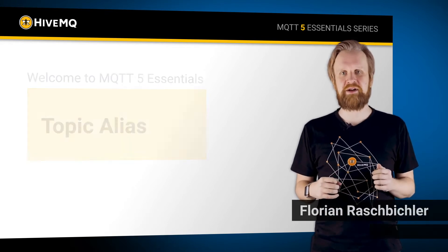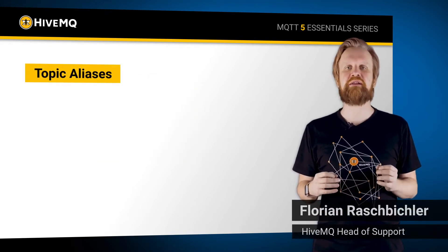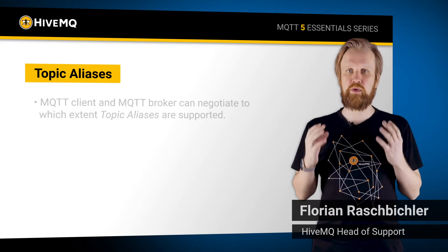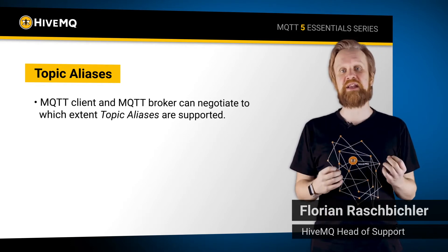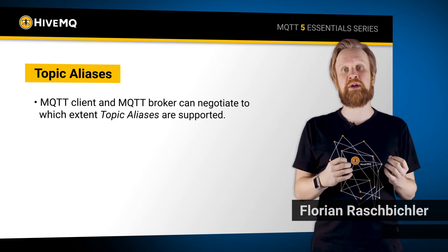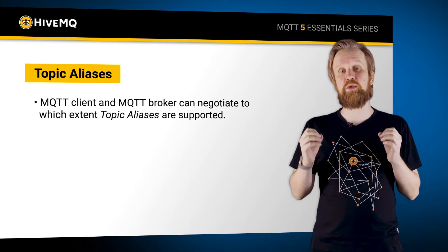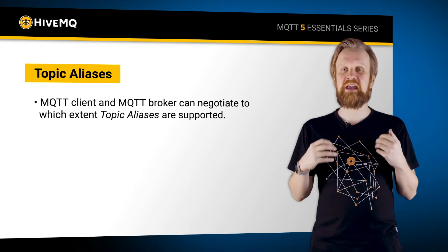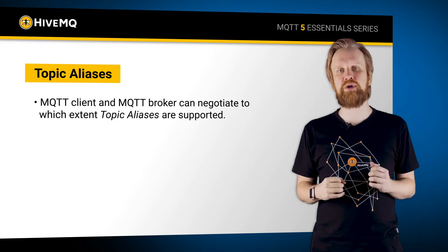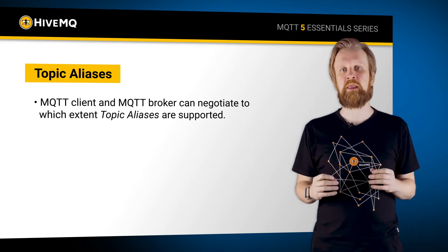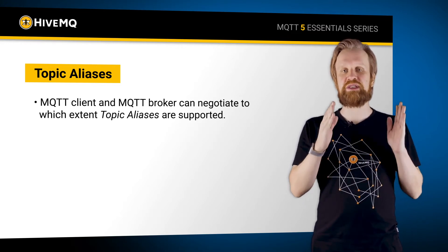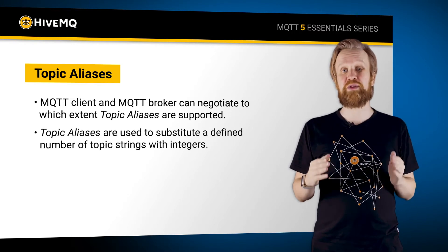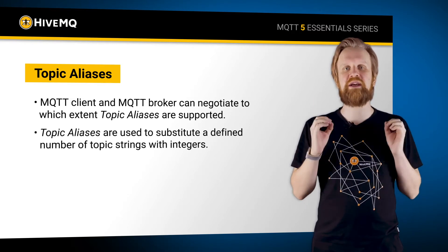Topic Aliases are a nifty little feature where a client and a broker can negotiate with one another to which extent they want to support that feature. Given that both the client and the broker do support the feature, it is used to substitute a defined number of Topic Strings with integers.